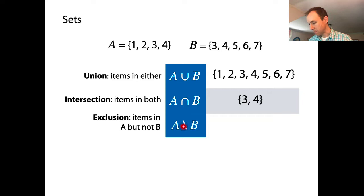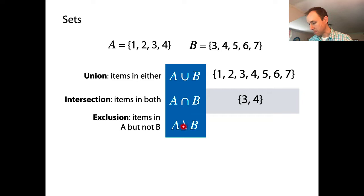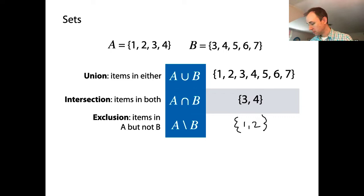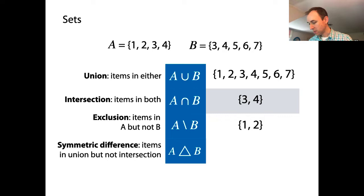There's another operator called exclusion. If we take A backslash B, we're trying to get at the items that are in A that are not also in B. In this example, that would be just 1 and 2 — the only two items in A that are not in B.